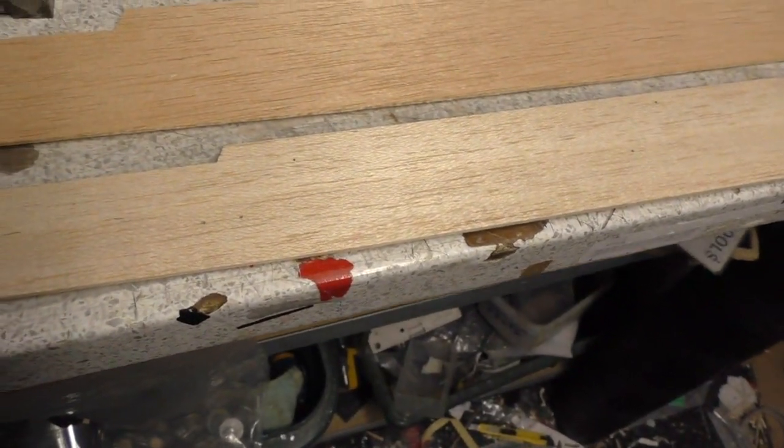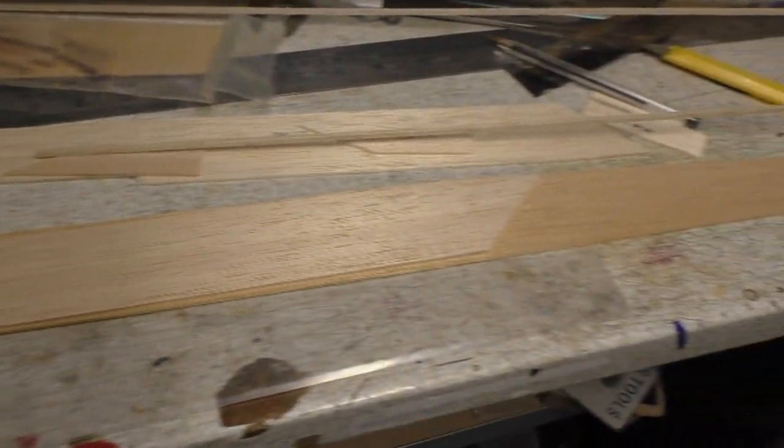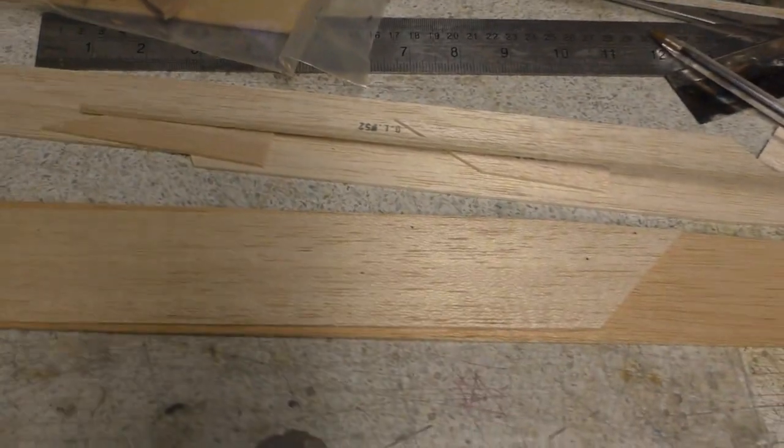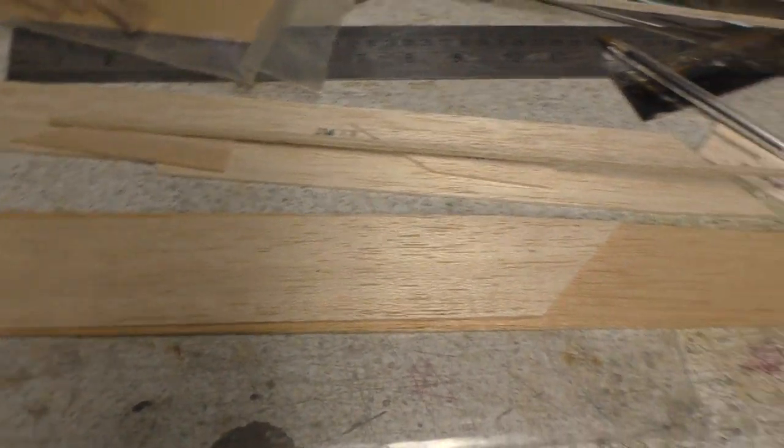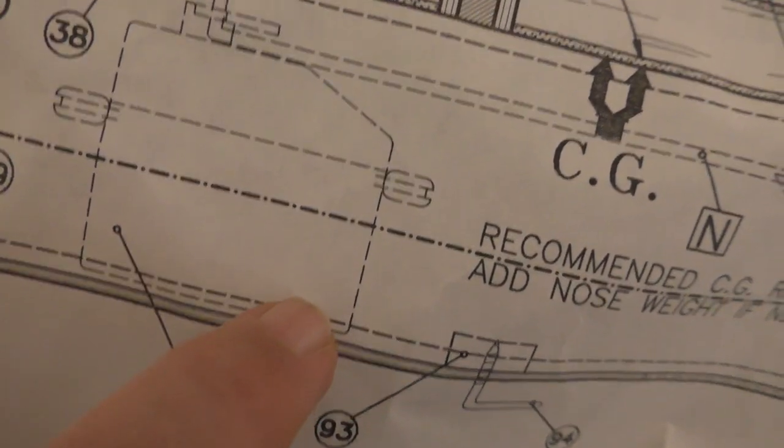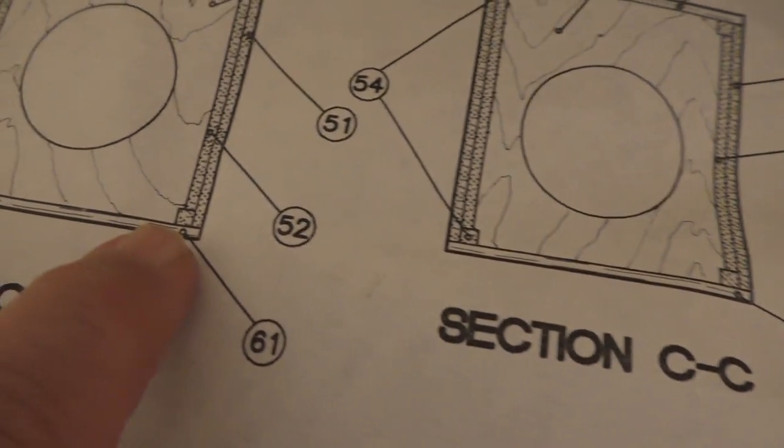So first things first, we need to get this doubler glued onto that fuselage side there, and then obviously the same with the other side making an opposite side. Now on this design, we've got to stick this little bit of wood here when we make it into there like that all the way around. As you can see on the drawing here, it's basically this little bit here which is this little square here.